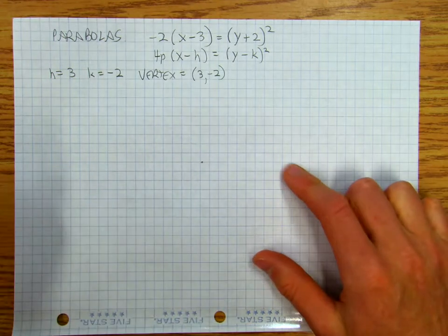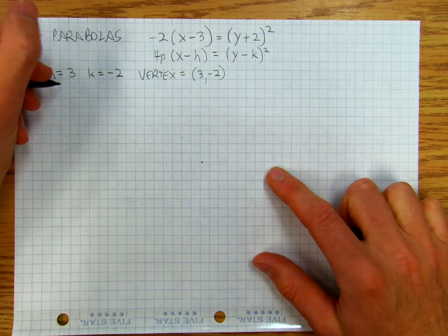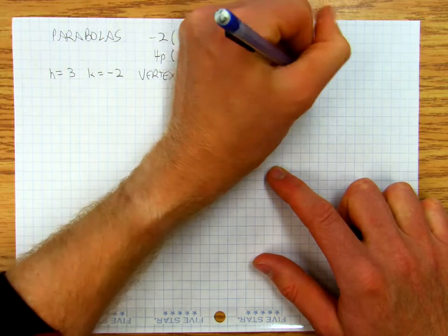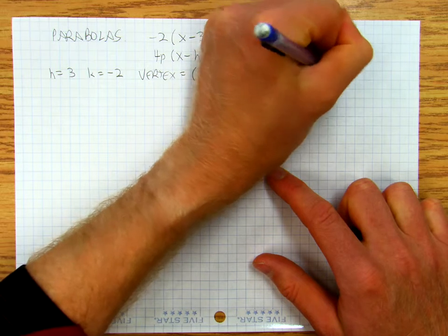And now I know that 4p is equal to negative 2, so that p is equal to negative 1 half.